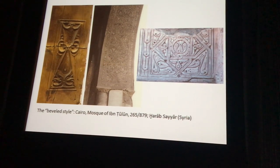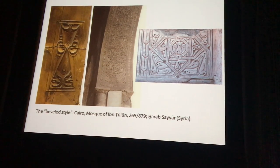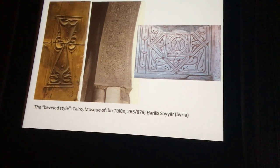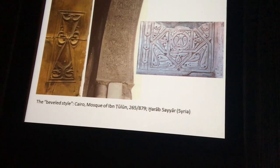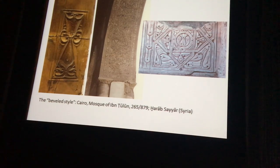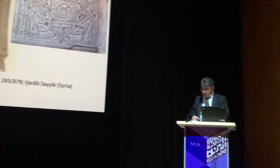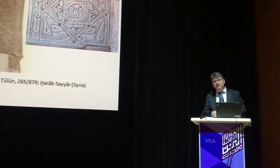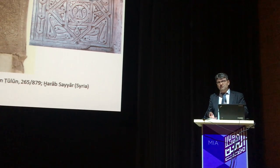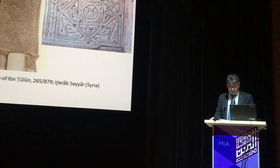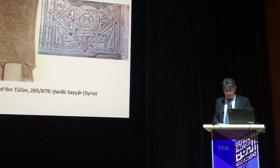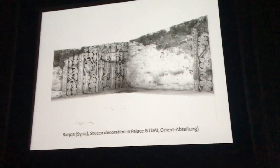We can also see the close link between the stucco and the woodwork, which we find from Samara as well as from Ibn Tulun in Egypt, where the same treatment of forms can be seen in the carved wood. This is also one of the characteristic properties of stucco work through all periods of Islamic art — that there is a close connection between stucco and other media of art, and we find the same forms and the same stylistic development in different materials.